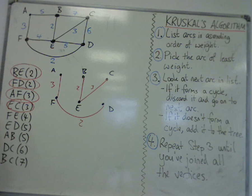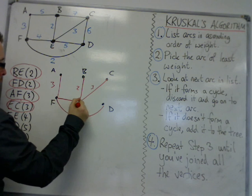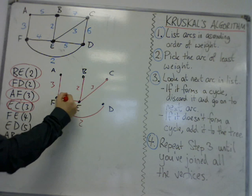And then I've got F, E. That won't create a cycle. So F, E with 4.